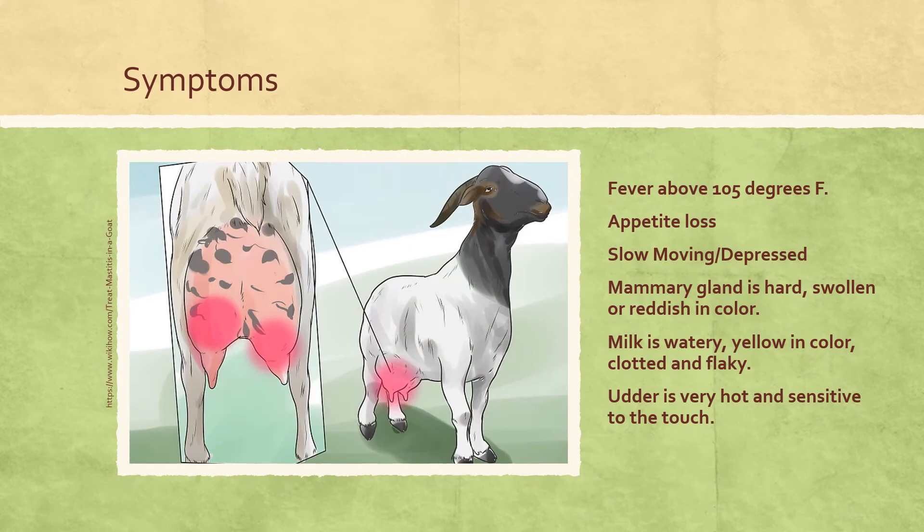Some of the first symptoms you may see are a fever above 105 degrees Fahrenheit, appetite loss, slow-moving or depressed goats. The mammary gland may be hard, swollen, or red in color. The milk can be watery, yellow, or clotted — it just doesn't look like normal milk. The udder can be very hot and sensitive to the touch.